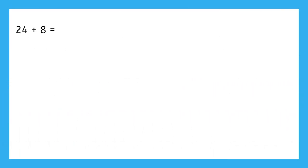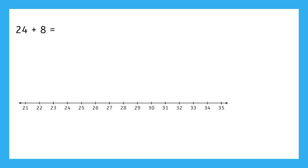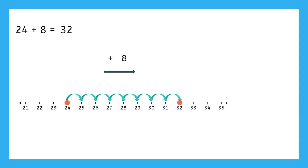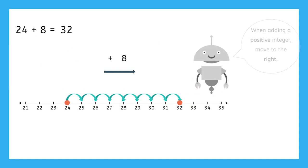In our last video, we solved 24 plus 8 using base 10 blocks. Let's take a look at this problem with another familiar tool, the number line. To add or subtract with the number line, start by finding the location of the first number, which is 24 here. We know that numbers get larger as we move to the right on the number line, and adding two positive integers gives us a larger sum. So adding positive 8 means we should move 8 units to the right, landing us at our answer 32. Notice that when we add a positive integer, we move to the right on the number line.